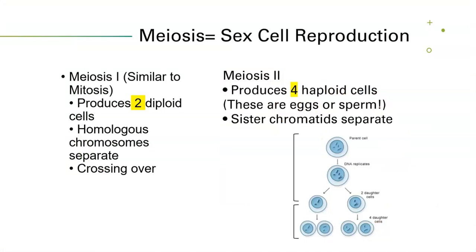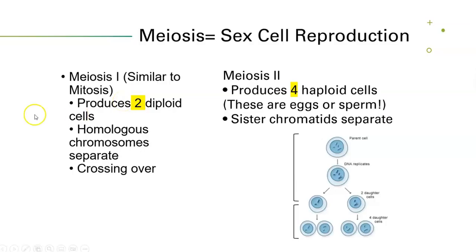Meiosis equals your sex cell reproduction. It starts with meiosis 1 and ends with meiosis 2. Meiosis 1 is very similar to mitosis, but has a few crucial different steps such as chromosome separating and crossing over. Meiosis 2 gives you your four haploid cells, which at the end of this picture you can see are called daughter cells — those are going to be eggs or sperm cells.